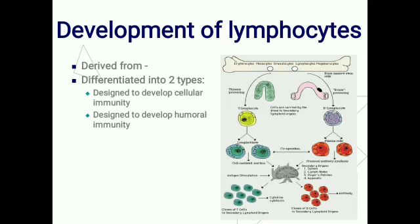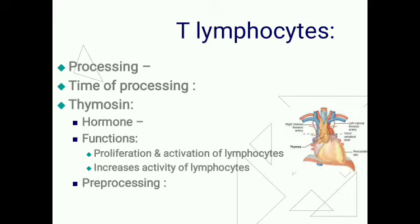The second variety are designed to develop humoral immunity. They are pre-processed in the liver during mid-fetal life and pre-processed in bone marrow in the late fetal life — these are B lymphocytes. T lymphocytes are pre-processed in the thymus; the time of pre-processing is just before birth and a few months after birth. There is a hormone, thymosine, secreted by the thymus gland which accelerates proliferation and activity of lymphocytes.